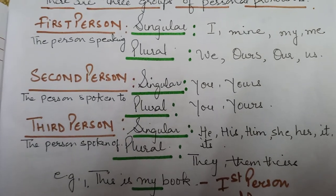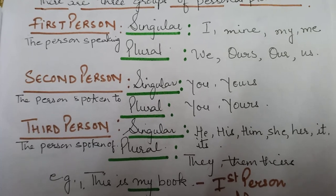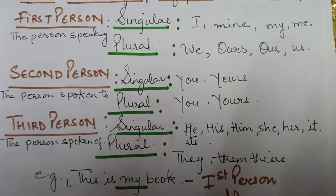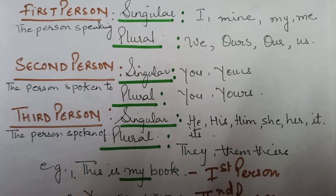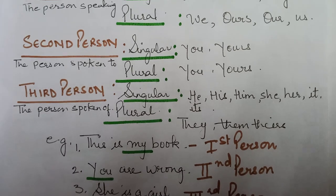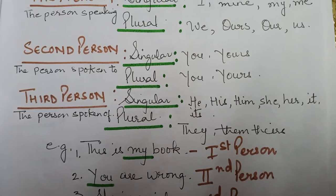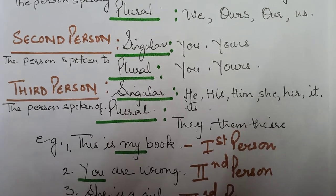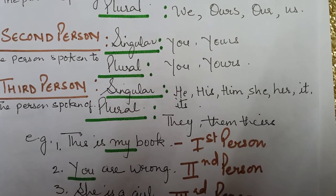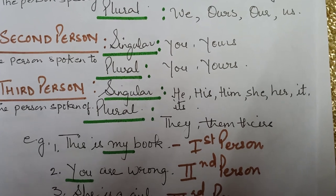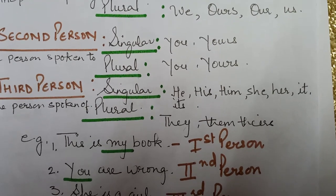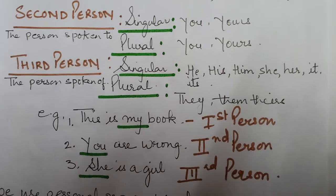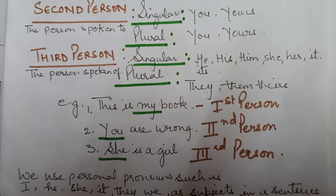Second person — the person spoken to. In both the singular and plural forms, we use 'you' and 'yours.' In the third person — the person spoken of — in the singular form we use he, she, her, him, it, its. In the plural form, we use they, them, and theirs.